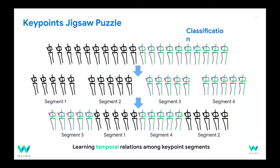The first auxiliary supervision is a jigsaw puzzle task. Given a sequence of keypoints, we split it into multiple segments, shuffle the order, and have the network predict the correct original ordering. This is important for learning temporal relationships among keypoint segments to better understand crossing actions.